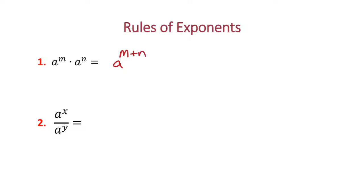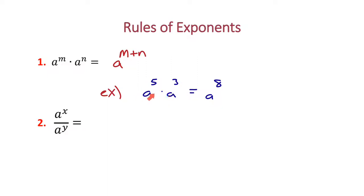An example: if I have a to the 5th times a to the 3rd, that's going to be equal to a to the 8th power. The reason why is because there are 5 a's and then 3 a's — we add them up, which is 8 a's. So it's a to the 8th.